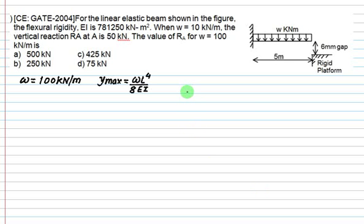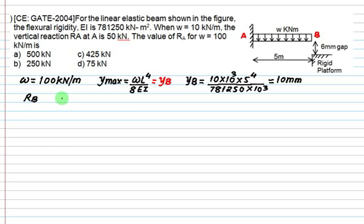We are only interested to calculate reaction when W equals 100. We will calculate maximum deflection and check whether this deflection is more than 6 mm or not. Maximum deflection for UDL is WL⁴ divided by 8EI. The deflection due to UDL is 10 mm whereas gap permitted is 6 mm. This 10 mm will exceed 6 mm, therefore it will touch the rigid platform.